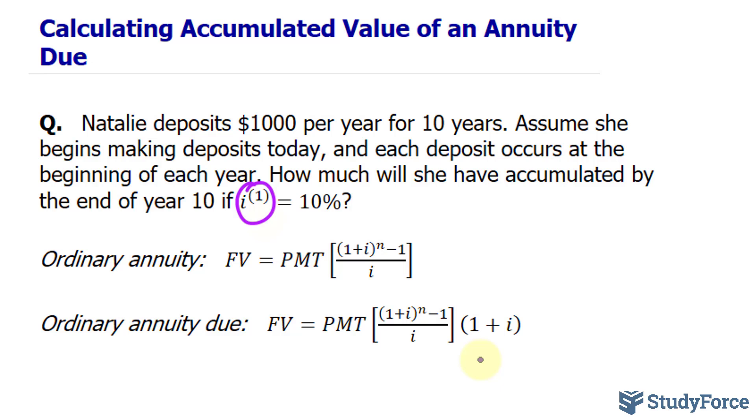So let's go ahead and answer this. The good thing about this is that the deposits, which are occurring once every year, and the interest correlate. Notice that the interest is being compounded yearly. If that weren't the case, then you would have to change the nominal interest into an interest rate that matches the cash flow. So let's go ahead and use this formula.